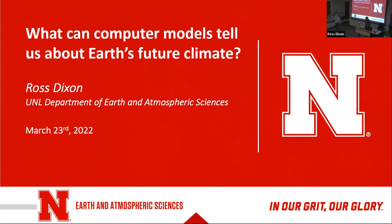Ross got his bachelor's degree and master's degree in physics and atmospheric physics, respectively, at University of Maryland, Baltimore County, and then went on to the University of Wisconsin for his PhD, which he received in 2017. He spent two and a half years at the National Center for Meteorological Research in Toulouse, France, then did another postdoc at the University of Arizona Oklahoma before coming back for the faculty position in January of 2021. Ross is going to talk today about climate models and how we use them to project future climates for Earth.